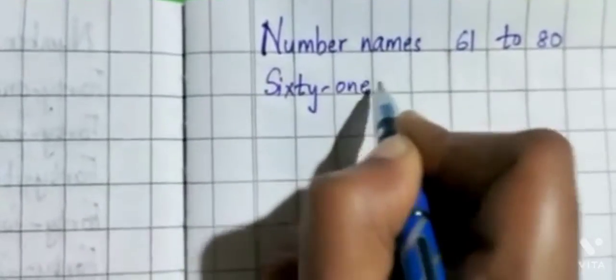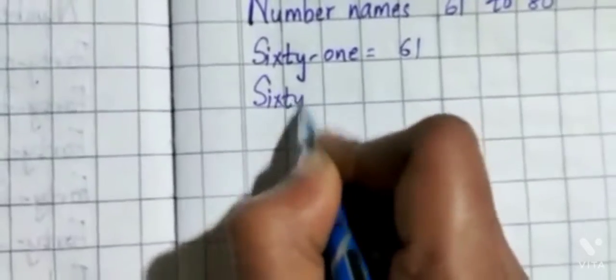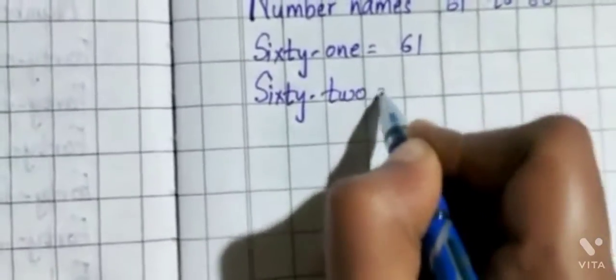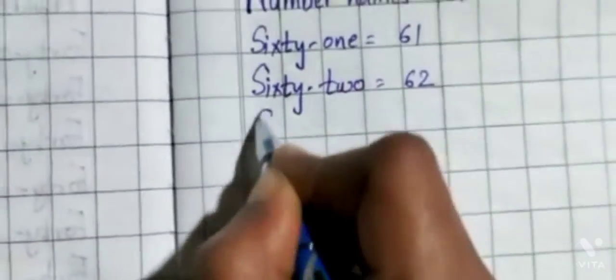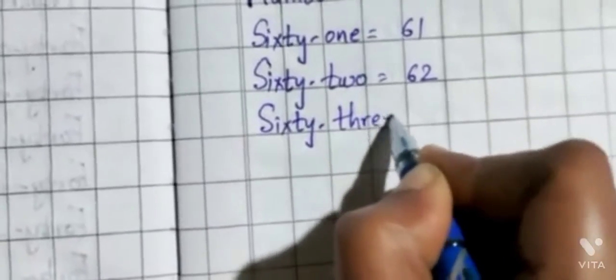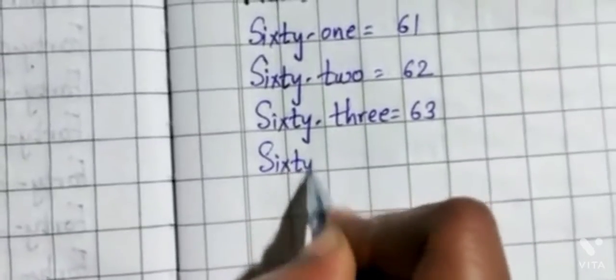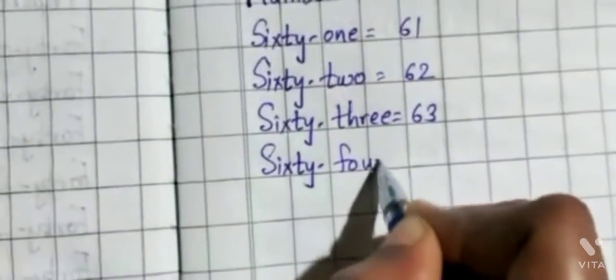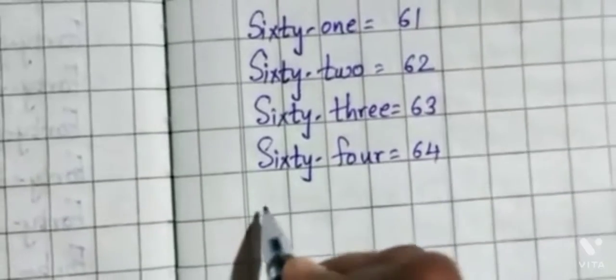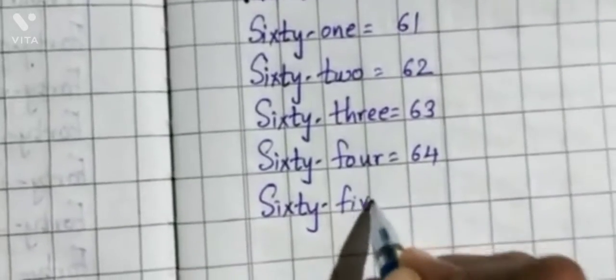S-I-X-T-Y-O-N-E, 61. S-I-X-T-Y-T-W-O, 62. S-I-X-T-Y-T-H-R-E-E, 63. S-I-X-T-Y-F-O-U-R, 64. S-I-X-T-Y-F-I-V-E, 65.